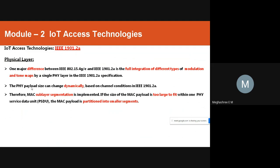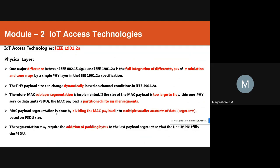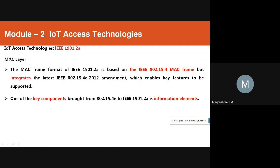Regarding MAC sublayer segmentation: if the size of the MAC payload is too large to fit within one physical service data unit, the MAC payload is partitioned into smaller segments. This is done by dividing the MAC payload into multiple smaller amounts of data based on the physical layer service data unit size. Padding may be added to the last segment, and all forms of addressing — unicast and broadcast — are subject to segmentation.